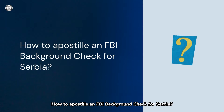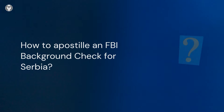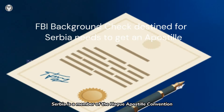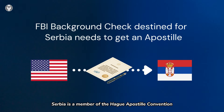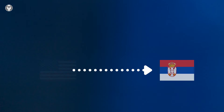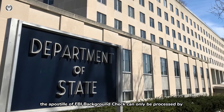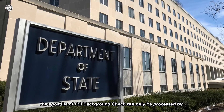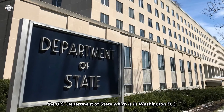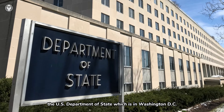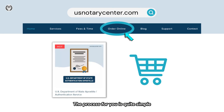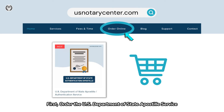How to apostille an FBI Background Check for Serbia? Serbia is a member of the Hague Apostille Convention. An FBI Background Check destined for Serbia needs to get an apostille first. In the United States, the apostille of an FBI Background Check can only be processed by the U.S. Department of State, which is in Washington, D.C. The process for you is quite simple. First, order the U.S. Department of State Apostille Service.